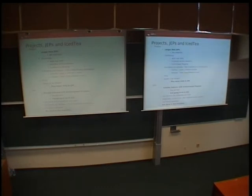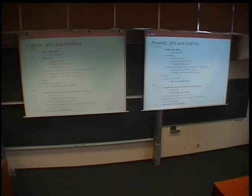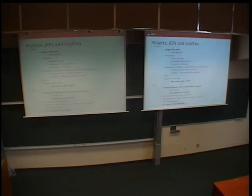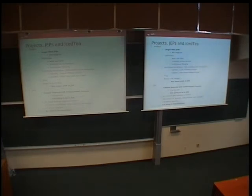Before proceeding to JDK9, it's necessary to understand the difference between a Project and a JEP. A JEP — a JDK Enhancement Proposal — is a very small feature targeted for one version and built in a live branch. A Project is much larger and done in its own forest. For JEP, the governing board decides. For Projects, there is public voting where the community decides whether your project is worth doing.